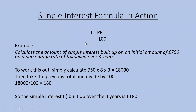Let's see it in context. We have an example: calculate the amount of simple interest built up on an initial amount of £750 at a percentage rate of 8% saved over three years. Using the formula I equals P times R times T divided by 100, I'm going to replace the letters with the relevant numbers. P, the initial sum, becomes 750. R, the percentage rate, becomes 8, and T, the time, becomes 3.